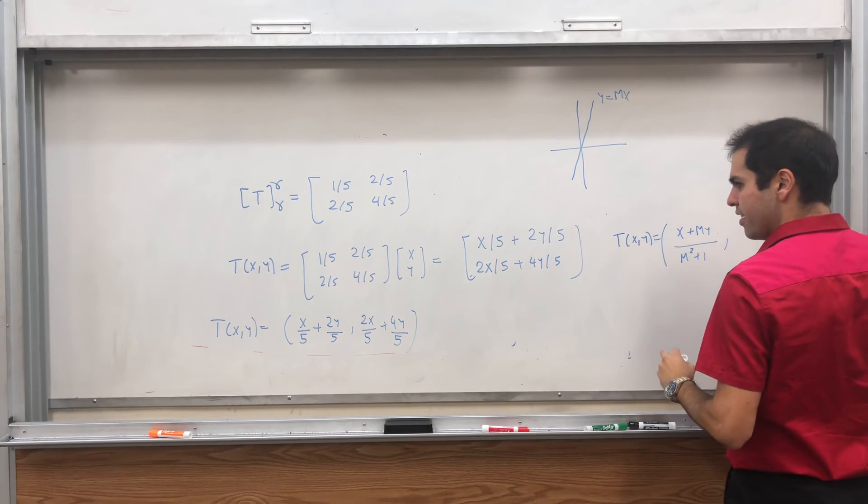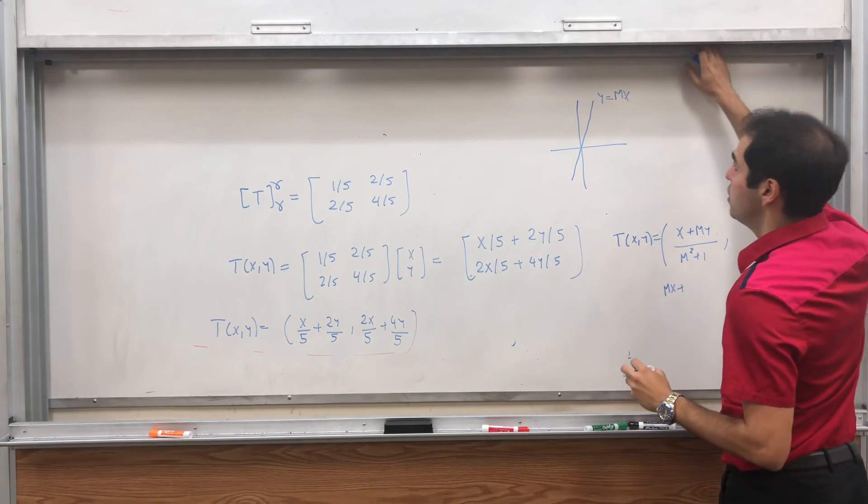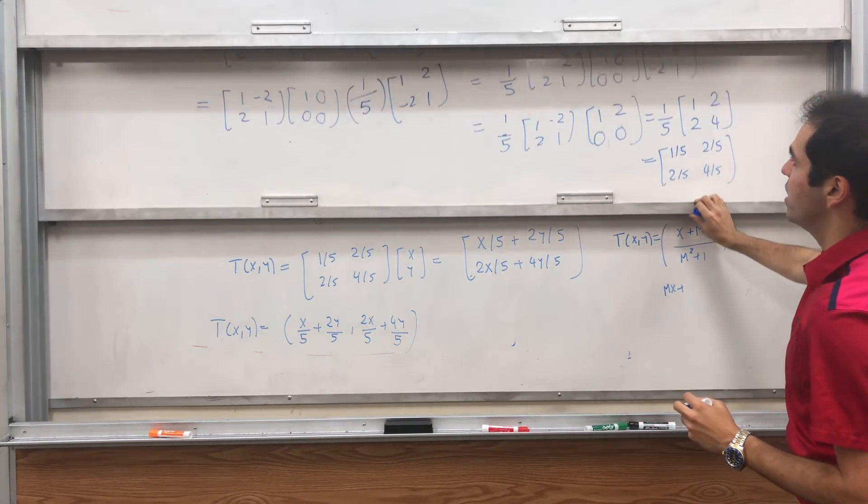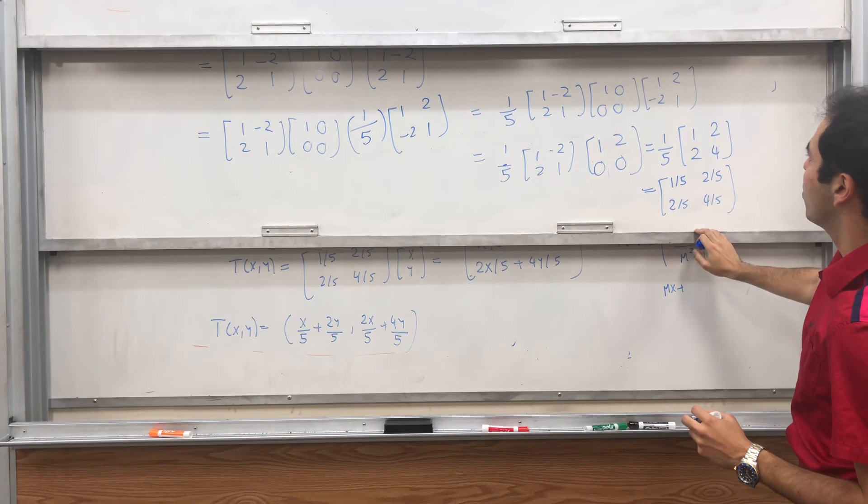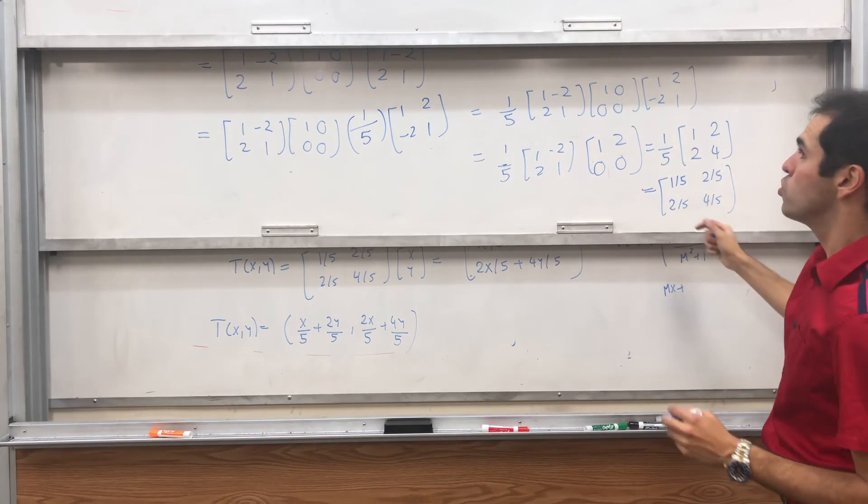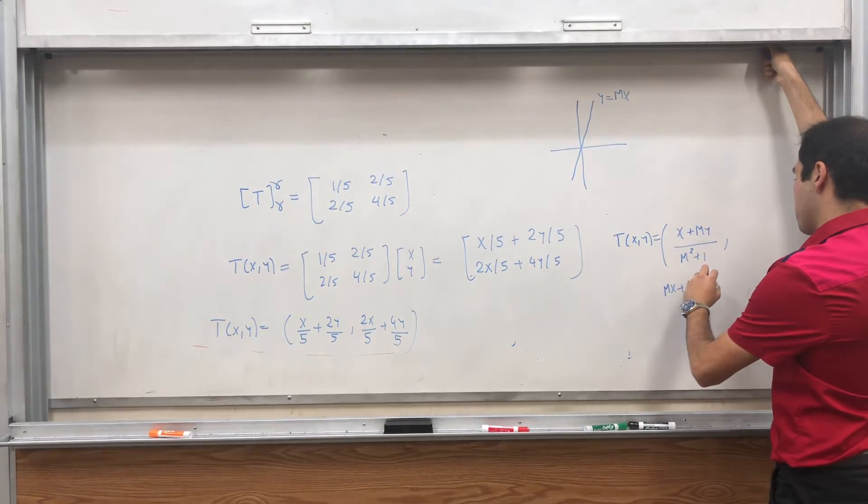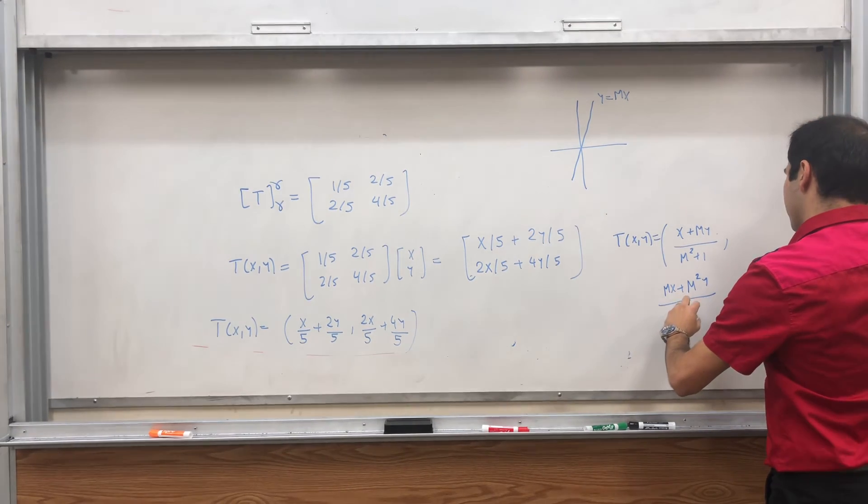over m squared plus 1, and mx plus, could it be, let me see if it's m squared, how do we get 4, so we get 2 times 2. So I think it's just m, so mx plus m squared y over m squared plus 1.